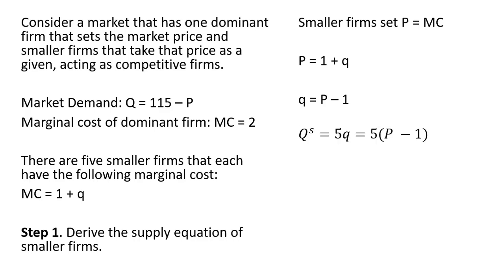To get the aggregate supply equation for all five firms, we're just going to multiply this Q here by five. Since there are five firms, we're going to multiply this Q by five. And that gives us the aggregate supply of the product by the five smaller firms.